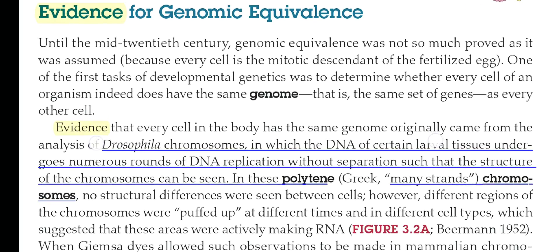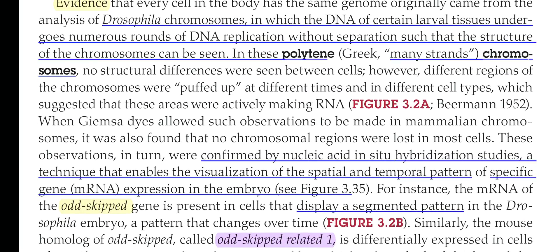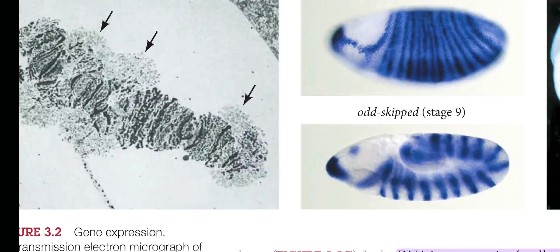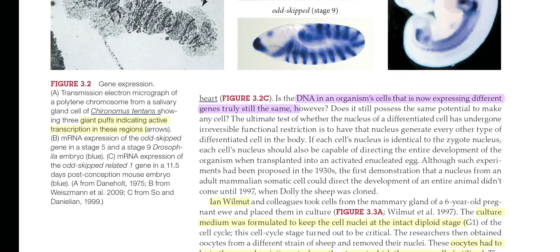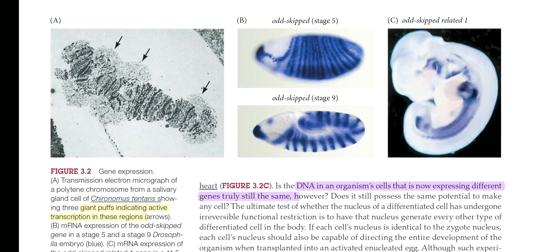Now, the evidence for genomic equivalence — every single differentiated cell possessing equal amounts of genome — can be proved experimentally. Experiments showing genomic equivalence include the polytene chromosomes found in the larval stage of Drosophila salivary cells, and certain R-skip genes showing the same type of protein being expressed in different regions, meaning all genes are identical and have the same genomic sequences.